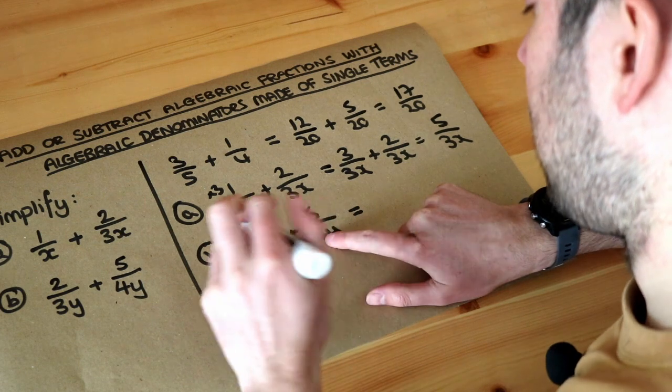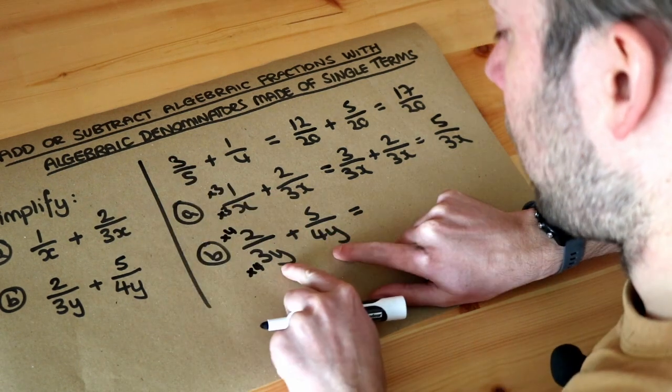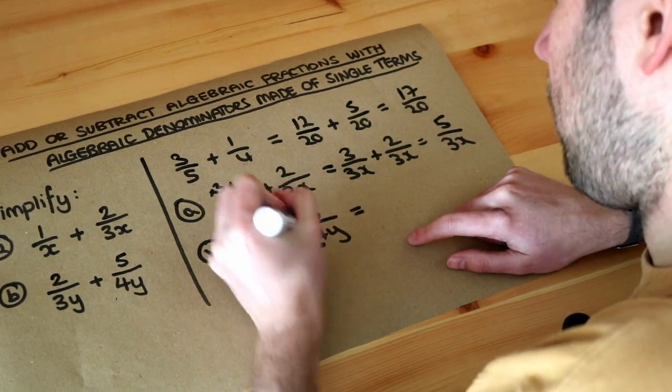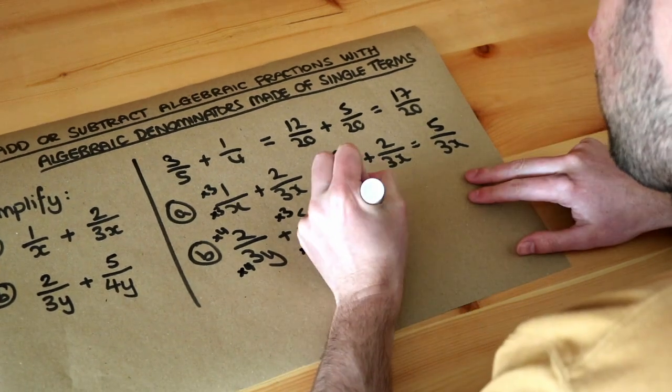3 and 4 both go into 12, so if you multiply the top and bottom of this fraction by 4, that becomes 12y. And if you multiply the top and bottom of this fraction by 3, that also becomes 12y. So let's do that.